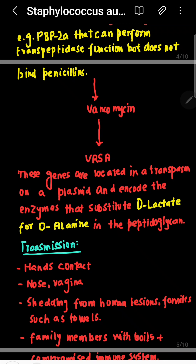The first treatment of choice is penicillin G. For resistant strains, we use nafcillin and methicillin. For nafcillin- and methicillin-resistant strains, we use vancomycin. For prevention of surgical wound infections, cefazolin is used.